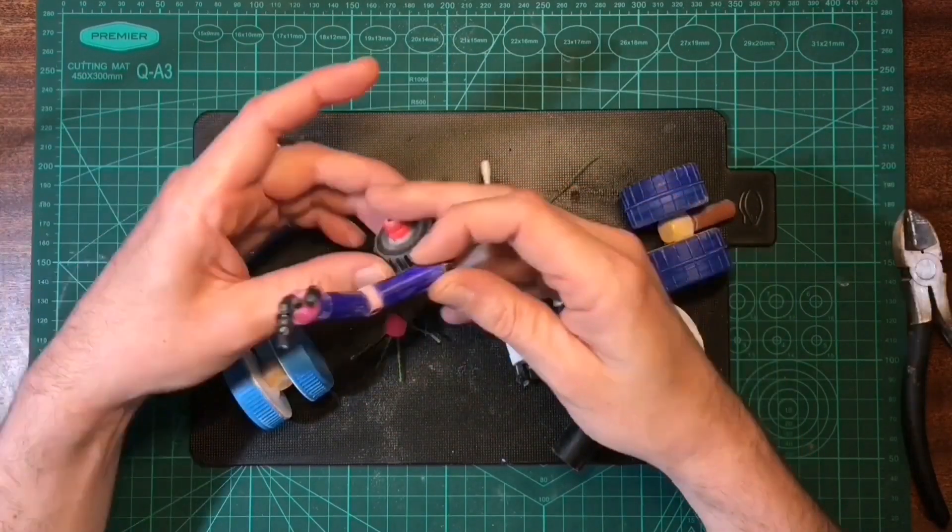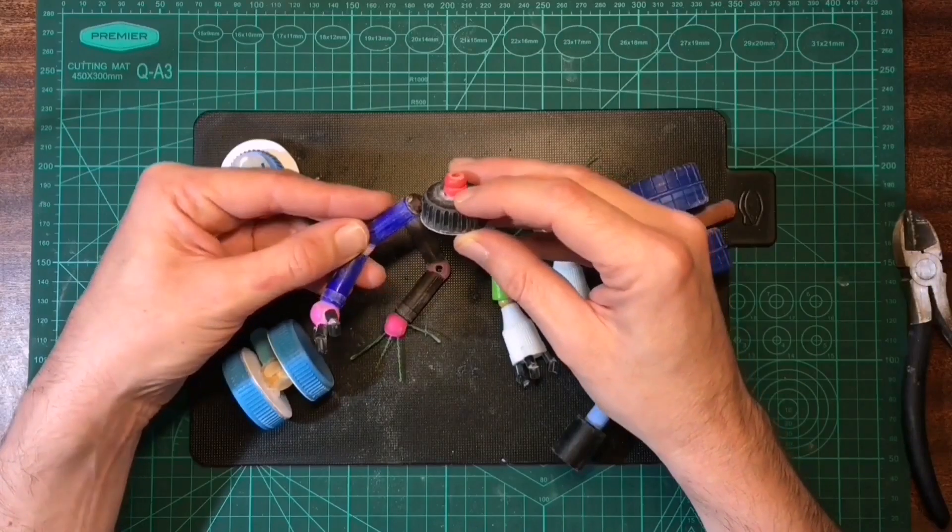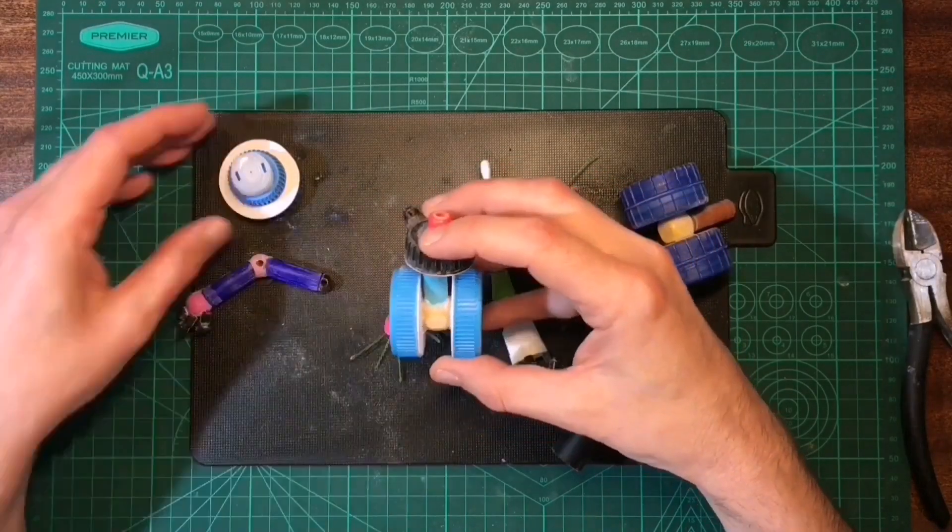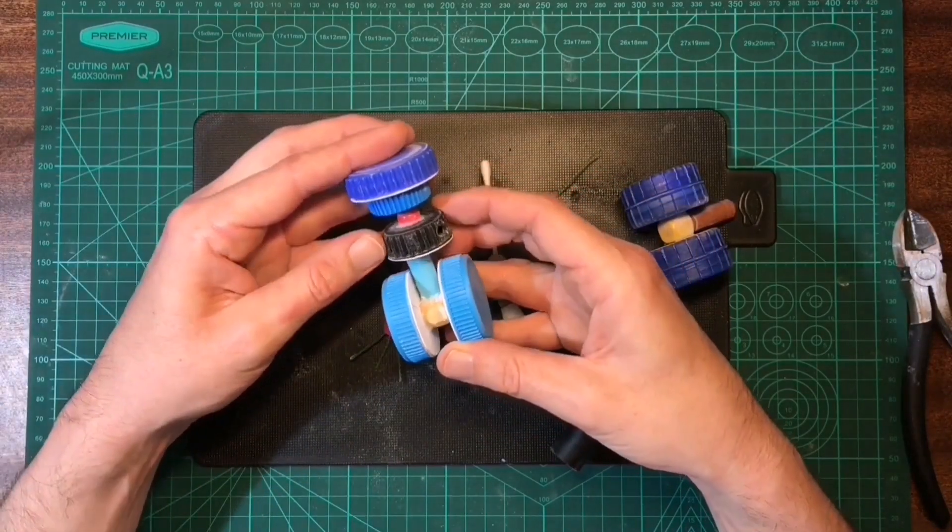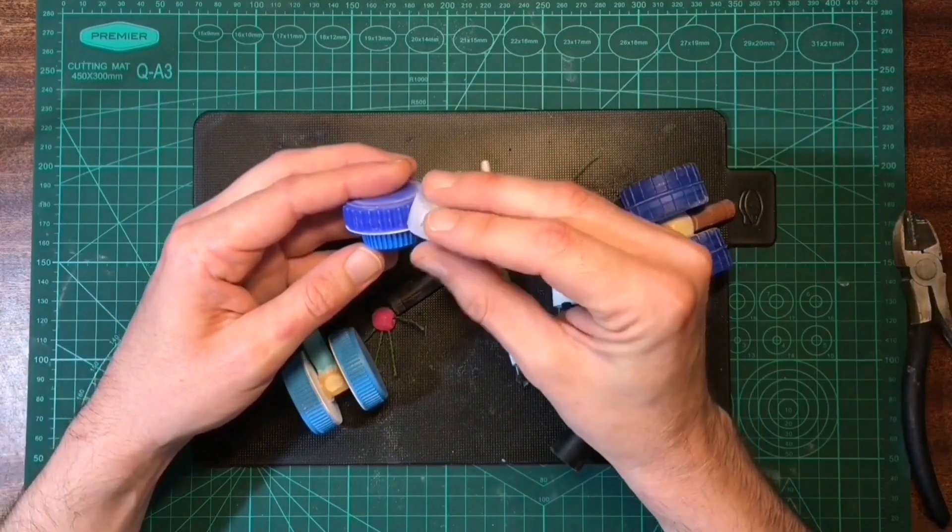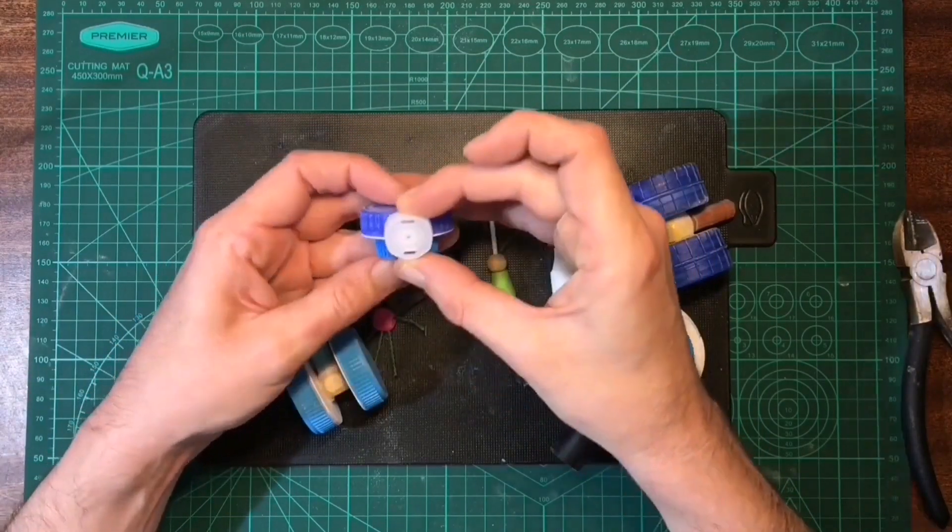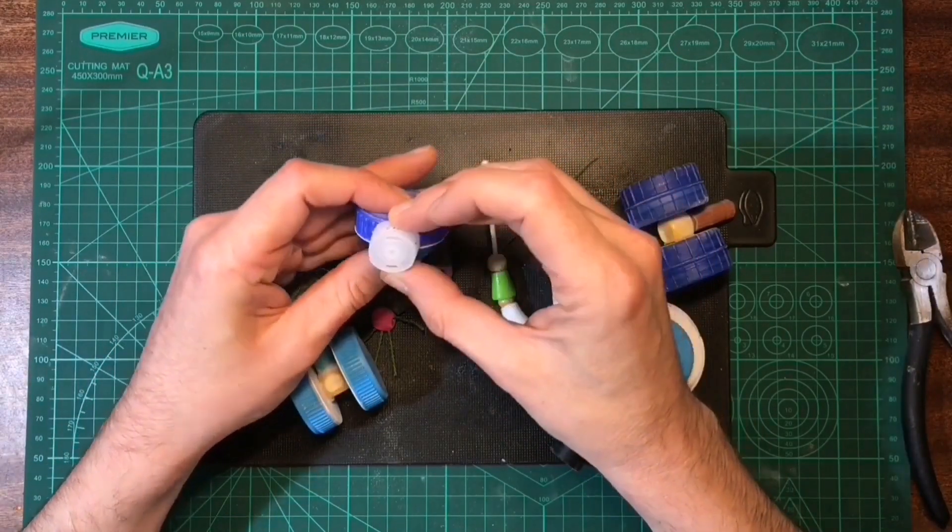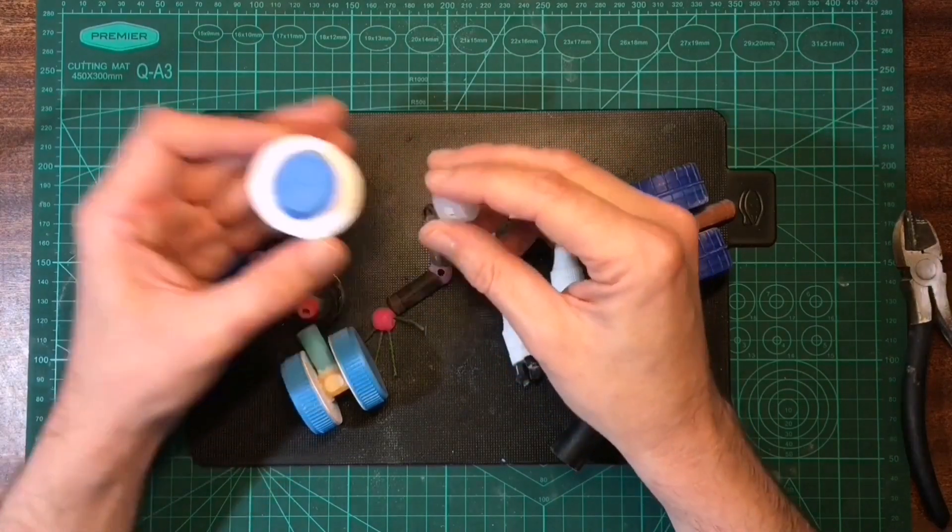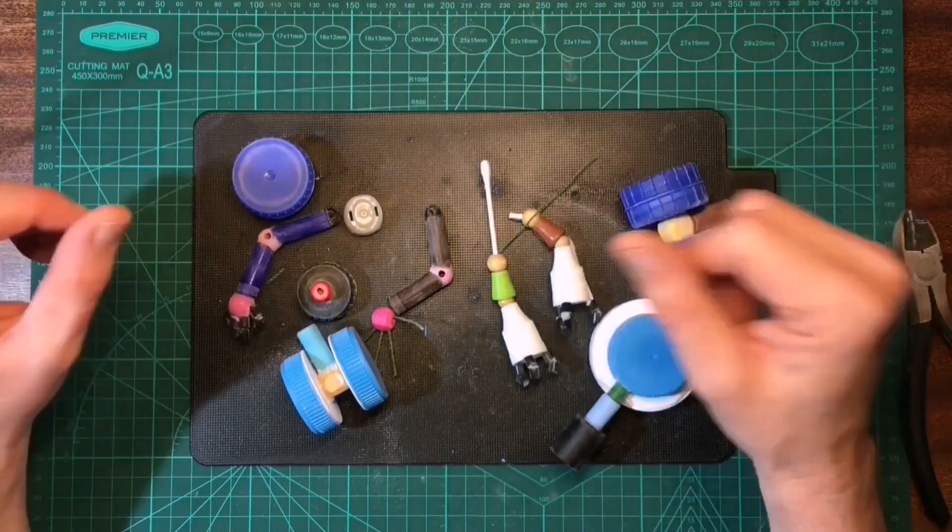And then I've got one of the hands glued on here. I just wanted to be able to position it against the body first, just to get the right orientation for the hand. And I still have to glue his eye on the front here. I don't think I'm going to have to modify this at all, I'll just glue it straight on.